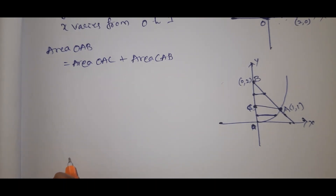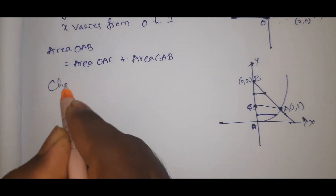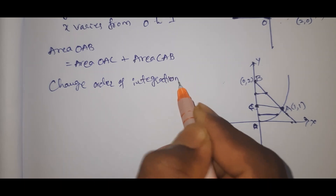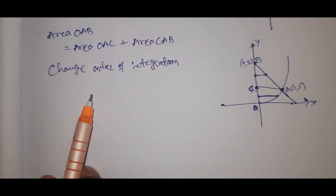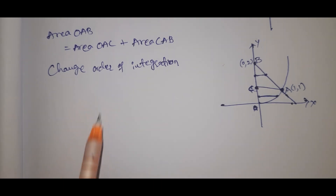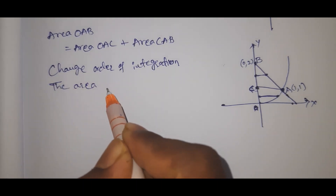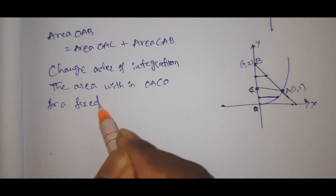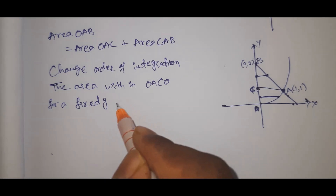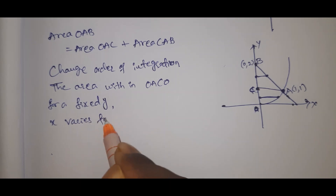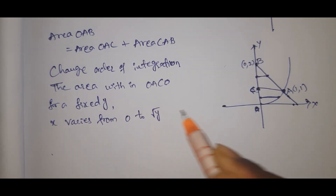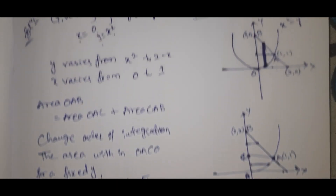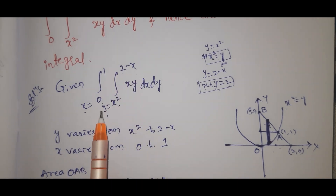Now we change the order of integration. For Region 1 (area OACO), for a fixed y, x varies from 0 to root y — since x² = y gives x = √y.